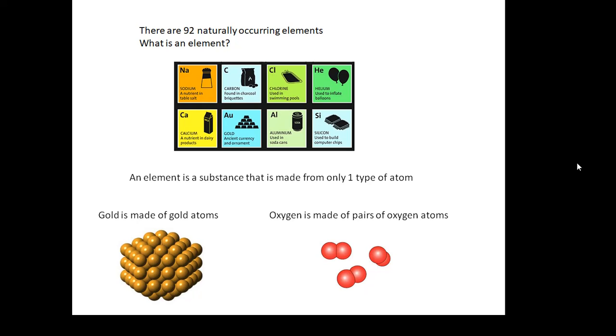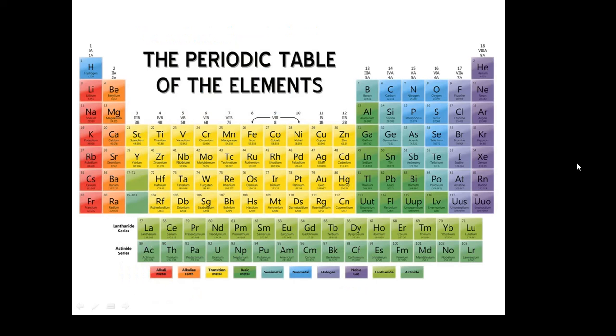How many types of atoms are there? Well, occurring in nature there are 92. Gold is made of gold atoms. Oxygen is made of oxygen atoms - they're glued together in molecules, but it's only one type of atom. It is an element. An element is made of one type of atom.